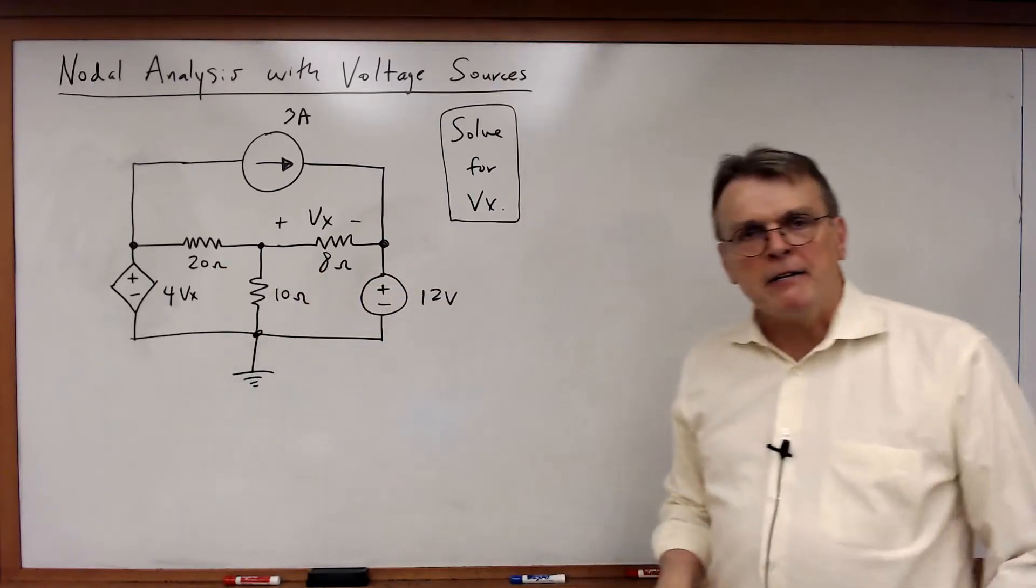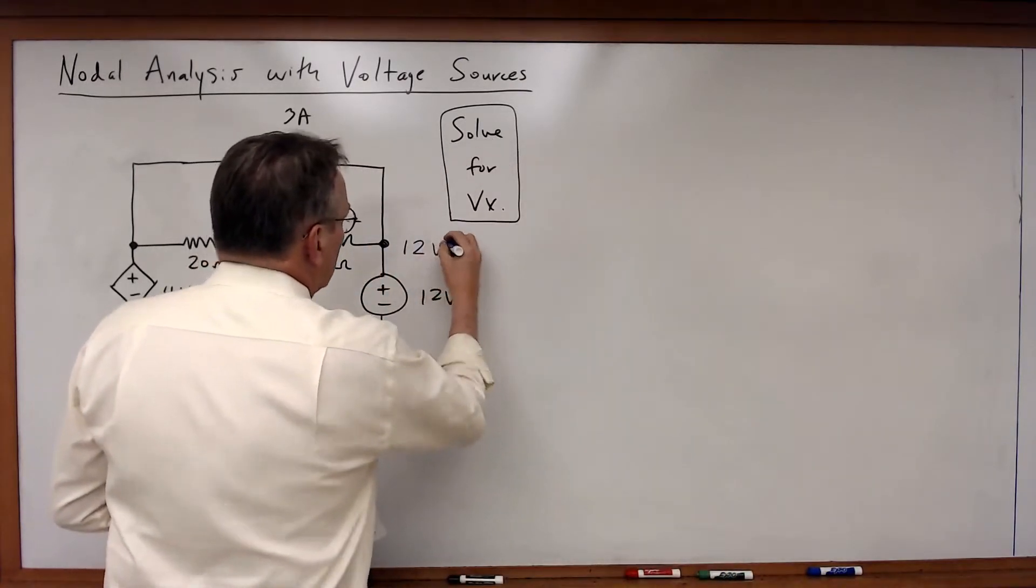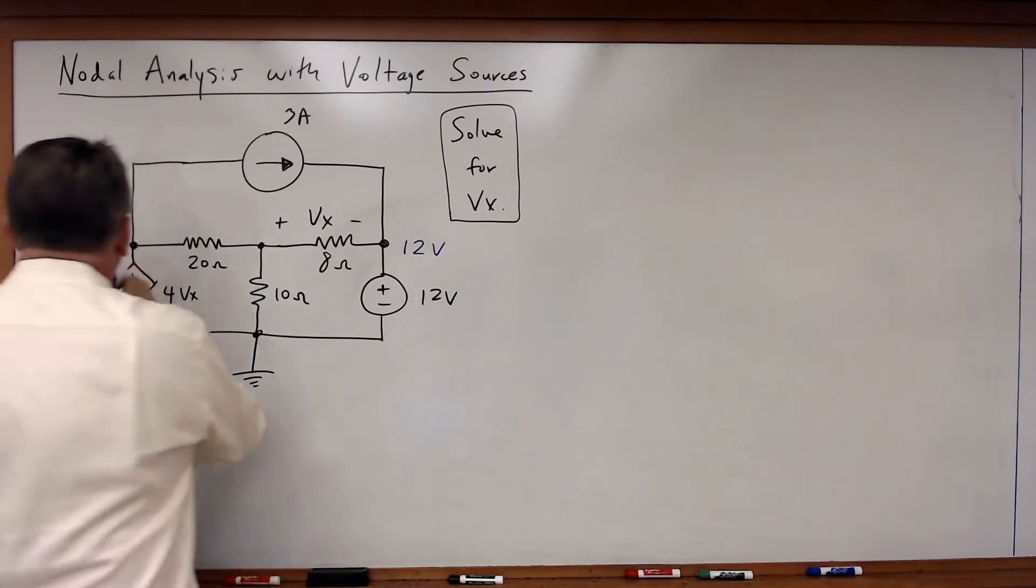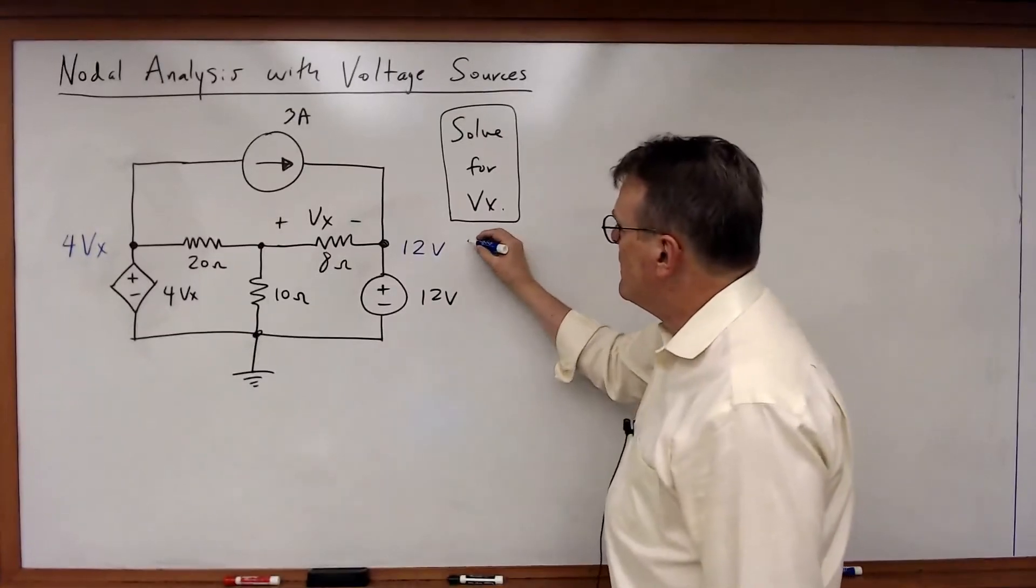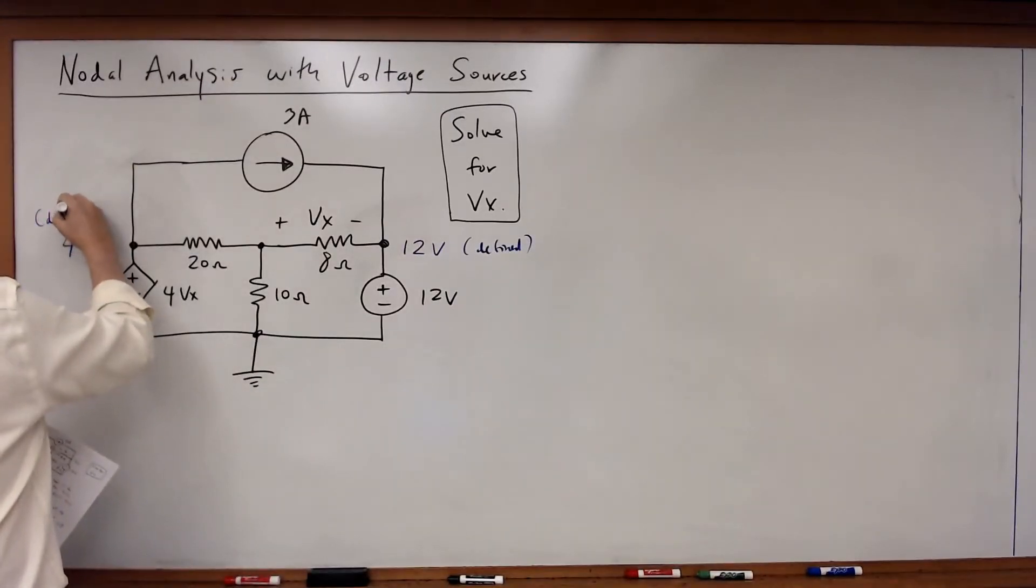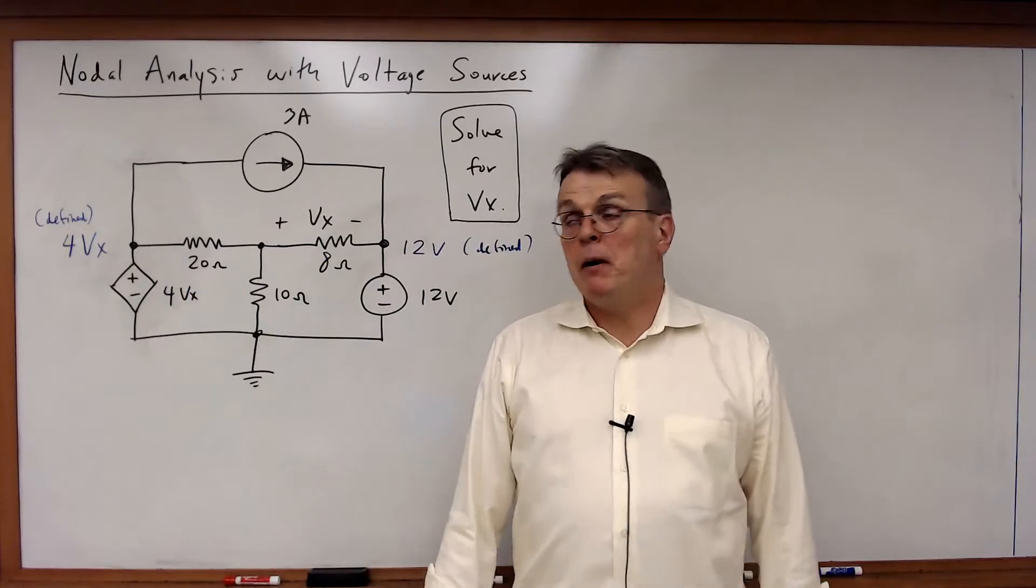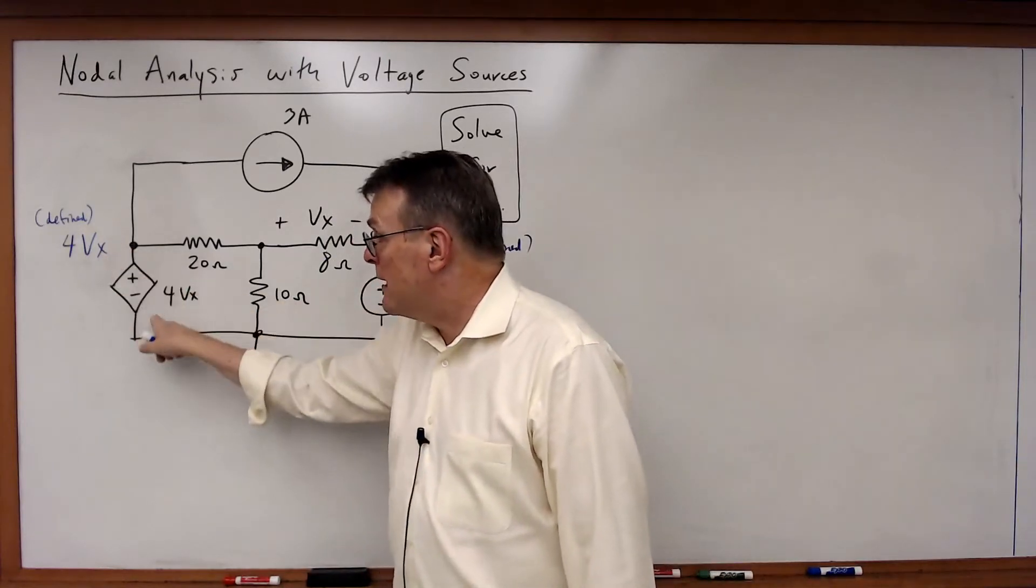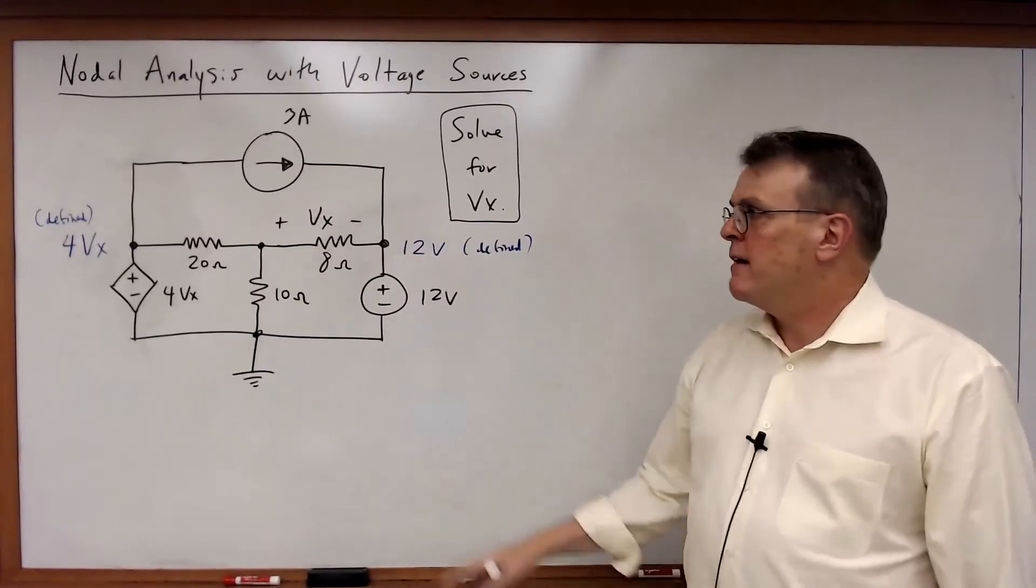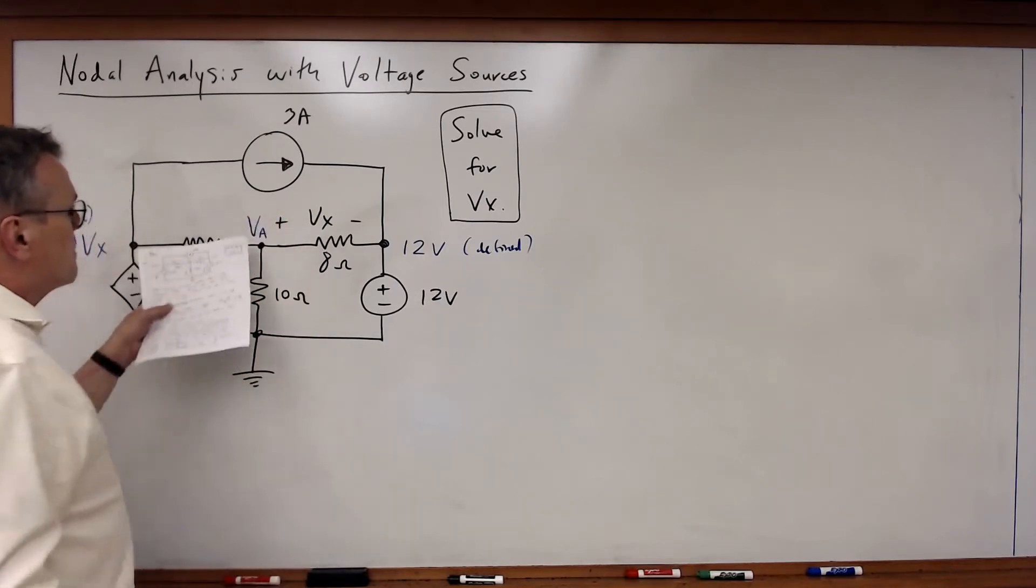So in this case, this is 12 volts connected to ground, this is 4Vx. So both of these are defined voltages, and the interesting part is that's also true even for the dependent voltage source. We do not know what Vx is, but we do know that voltage must be 4Vx because of that dependent source being connected to ground. So because both of those nodes are defined, that makes our problem a lot simpler. We really only have one undefined node voltage here in the center node.